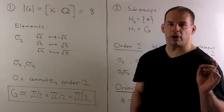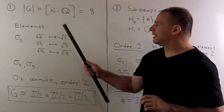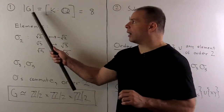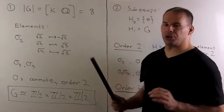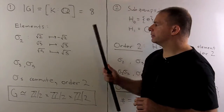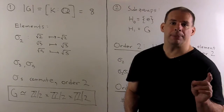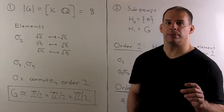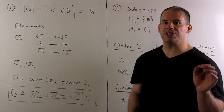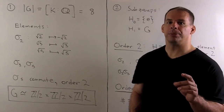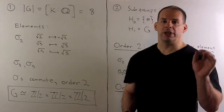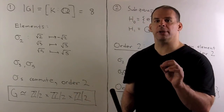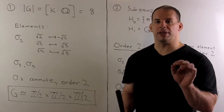Let's find the Galois group of our polynomial. Since K is the splitting field over Q, the order of the Galois group equals the degree of the extension, which is 8. To find the isomorphism class, we look at specific automorphisms. Any automorphism from K to itself fixing Q is determined by where √2, √3, and √5 go, since the rest of the basis elements are then determined.